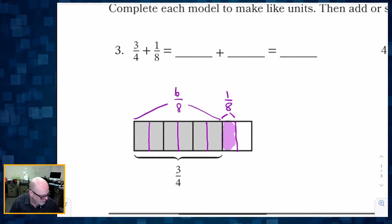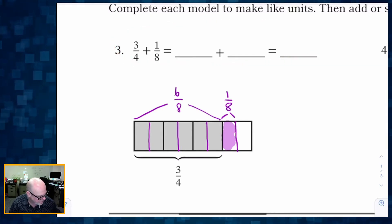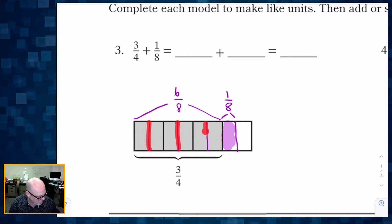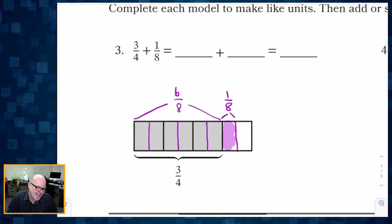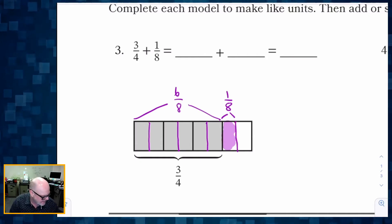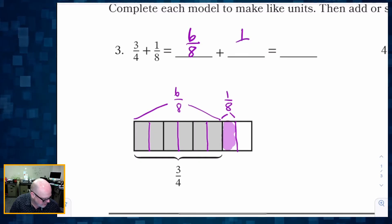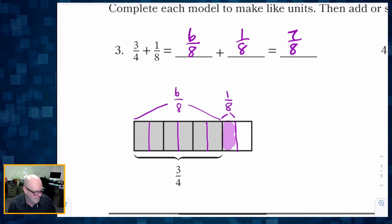So filling in the blanks up here: three-fourths — I chopped each of those fourths into two pieces, that's how I created eighths — so three-fourths is now six-eighths. Plus that extra one-eighth gives me seven-eighths as my total final answer.